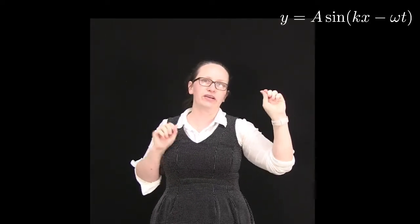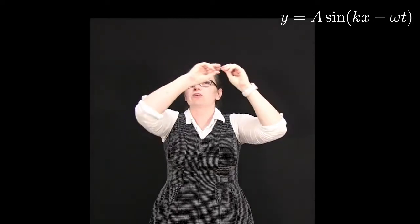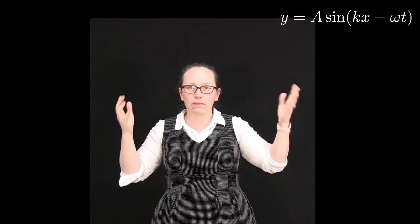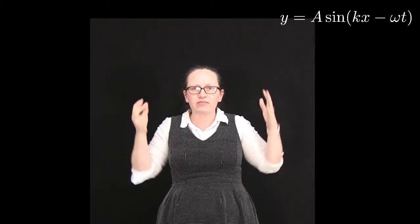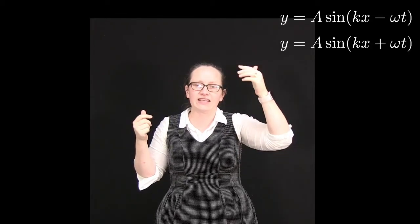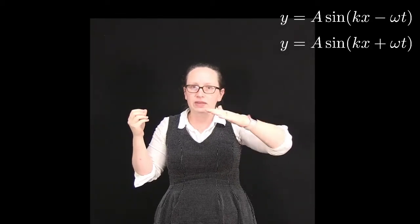So you know what happens at that point, but let's consider what happens along the rest of the piece of string. Once the wave is reflected it's traveling in the opposite direction. So we've now got a wave which we can describe by the equation y equals a sine kx plus omega t.